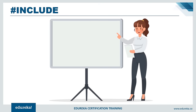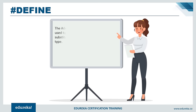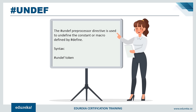#include is used to paste the code of a given file into the current file and includes system-defined or user-defined header files. It can be written using angle brackets or double quotes around the filename. #define is used to define a constant or macro substitution for any basic data type — syntax: #define followed by token and value. #undef undefines a constant or macro previously defined by #define.